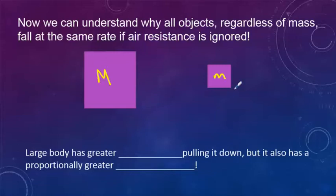So if we have two masses, mass big M and little mass little m, the little mass is going to have a little weight, whereas the big mass is going to have the larger weight.